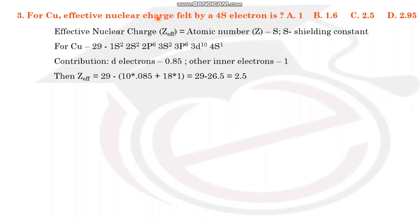We are considering the copper case. Copper has atomic number 29 and its configuration is: 1s2, 2s2, 2p6, 3s2, 3p6, 3d10, 4s1.